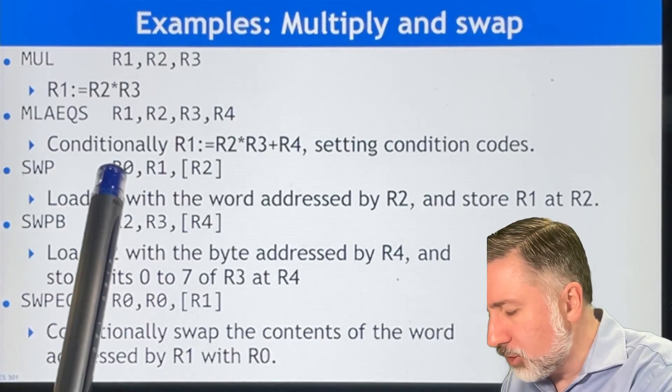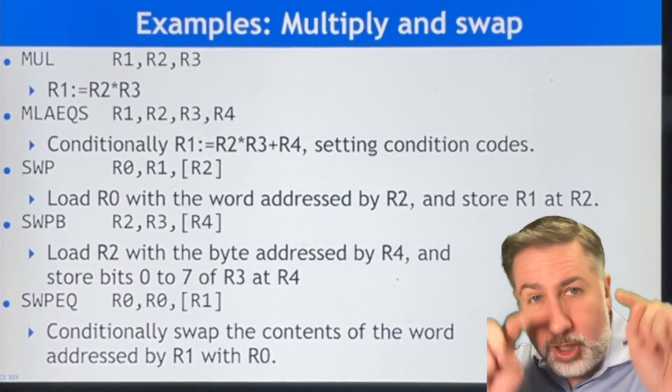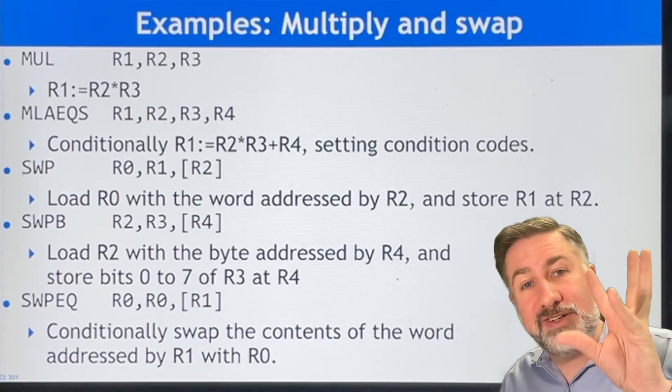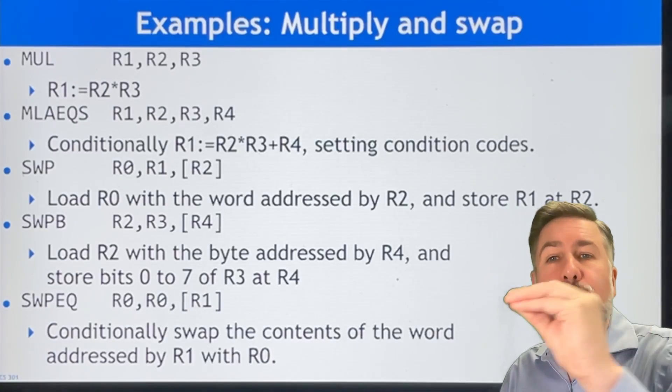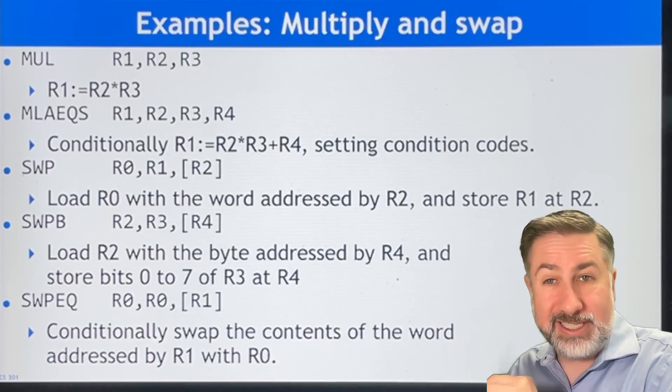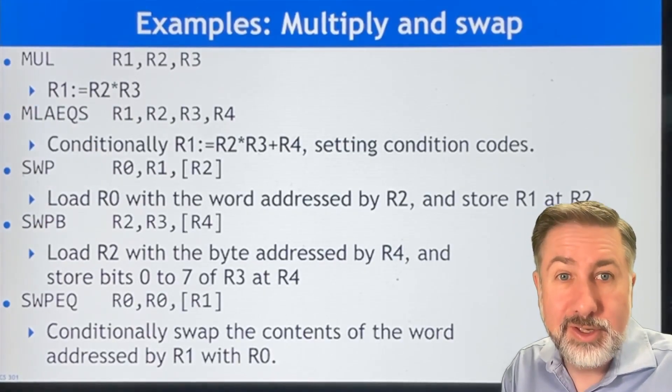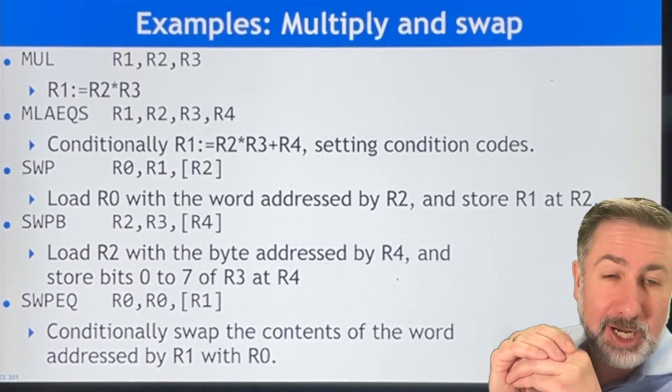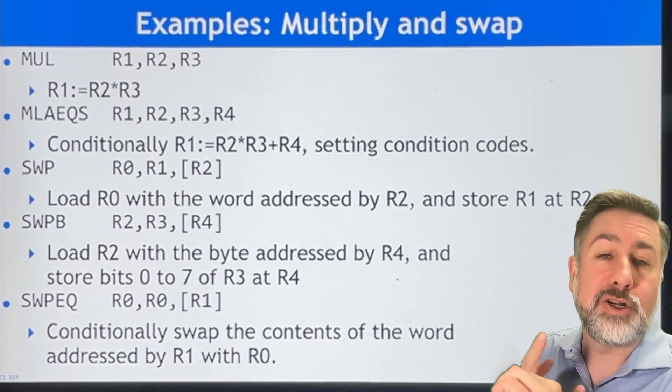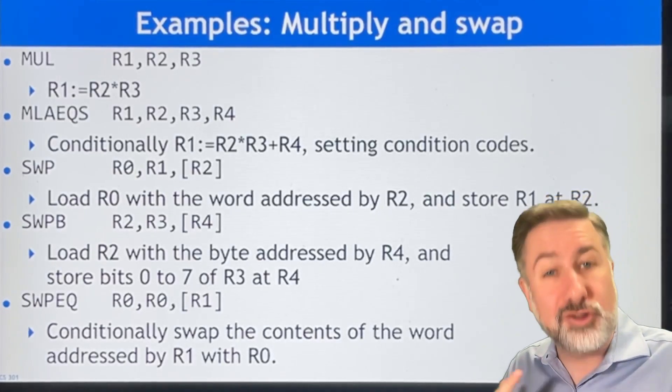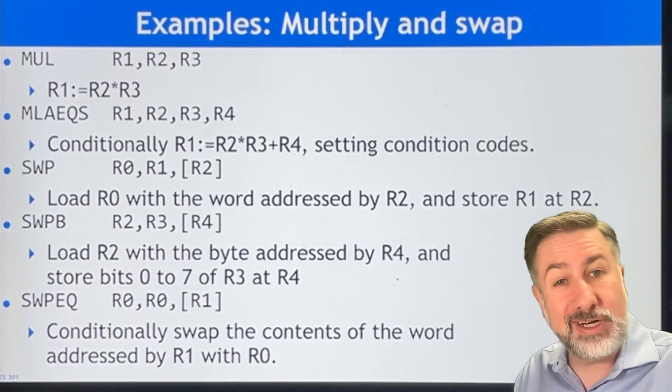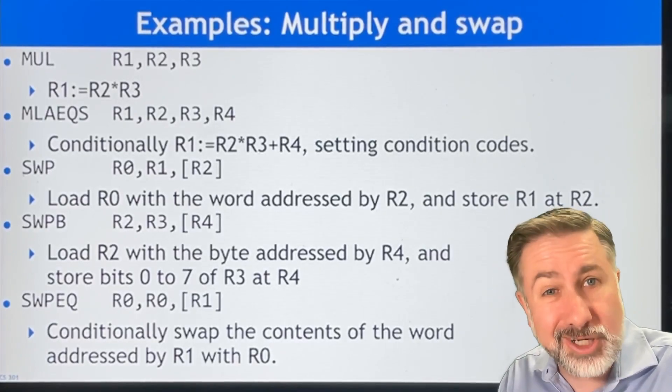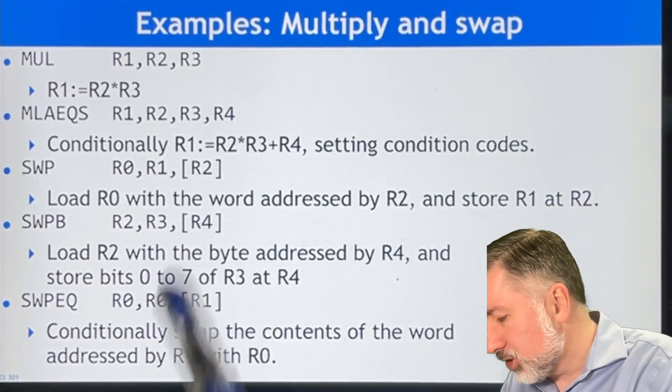Swap, you specify two registers and then an address. So you put R2 in square brackets because that says this is a memory address. You're going to bring whatever's at memory specified by R2 into R0 because that's the destination. You always list the destination first. Then you're going to take whatever's in R1 and put it into the memory specified by R2. So R0 and R1 are data and R2 is going to be interpreted as an address. And so you'd better be sure that R2 has an address in it. This is why you're not allowed to use R15 because the program counter is an address for instructions, not for data.